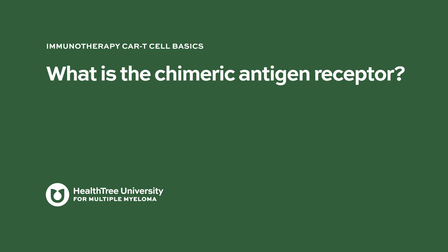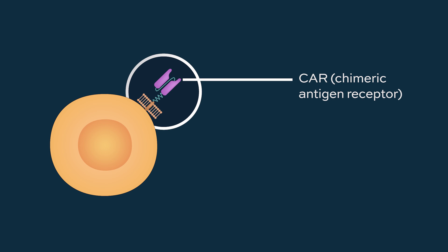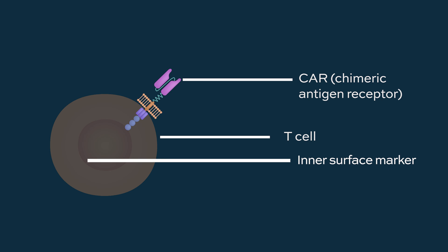What is the chimeric antigen receptor? The way that the CARs are constructed, there's a part of this chimeric antigen that is on the surface of the T-cell and another part that's embedded on the inner side of the cell membrane.